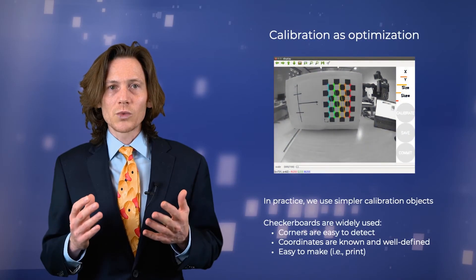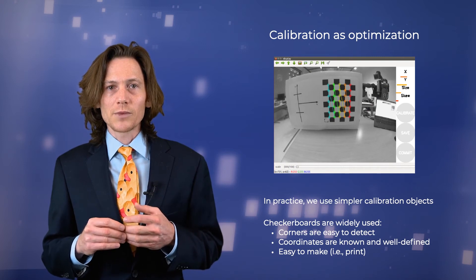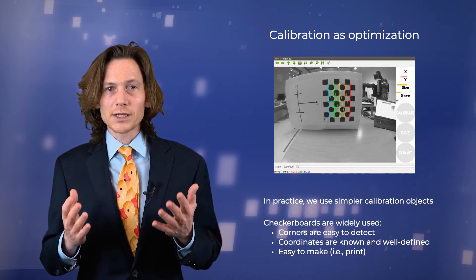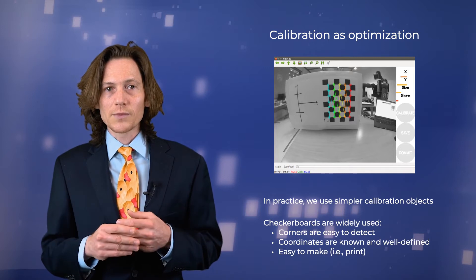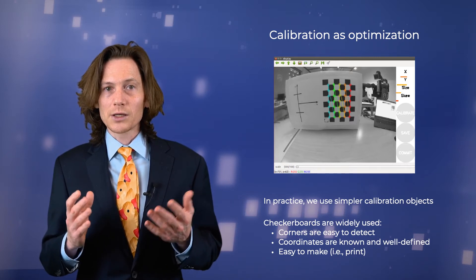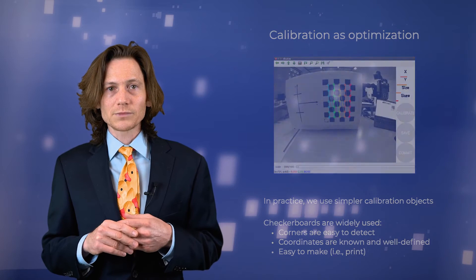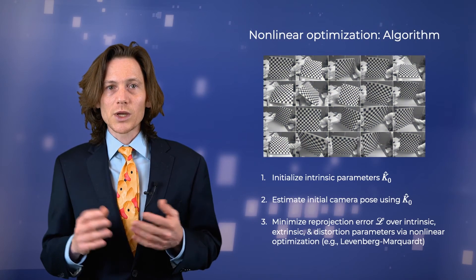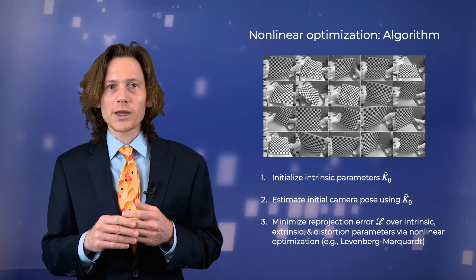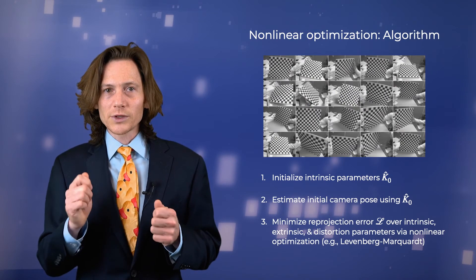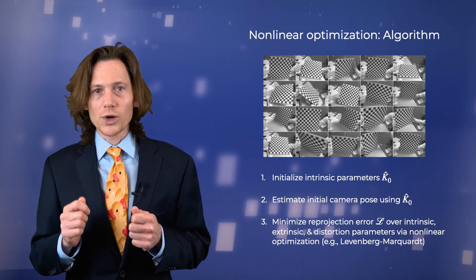As mentioned earlier, we often use checkerboards for calibration, including in Duckytown, because they provide scene points that are easy to detect and that have well-defined coordinates. Another advantage is that they are easy to make. We just have to hit the print button. In practice, we collect a series of images by moving the calibration target rather than the camera around in the scene, being careful to span a range of different scales and orientations.